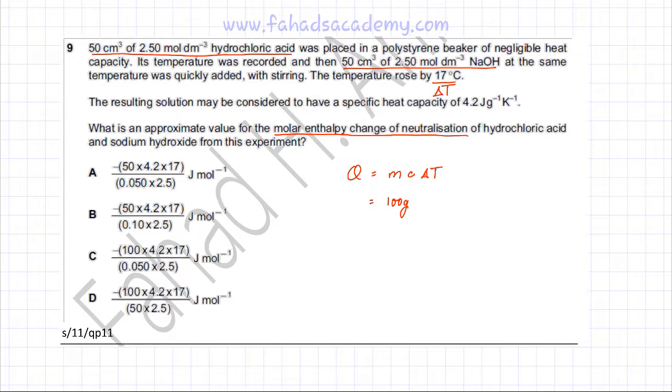and the specific heat capacity is given as 4.2 plus the change in temperature is given as 17 and remember since the temperature is rising, the temperature rose by 17 degrees centigrade which means it's an exothermic reaction